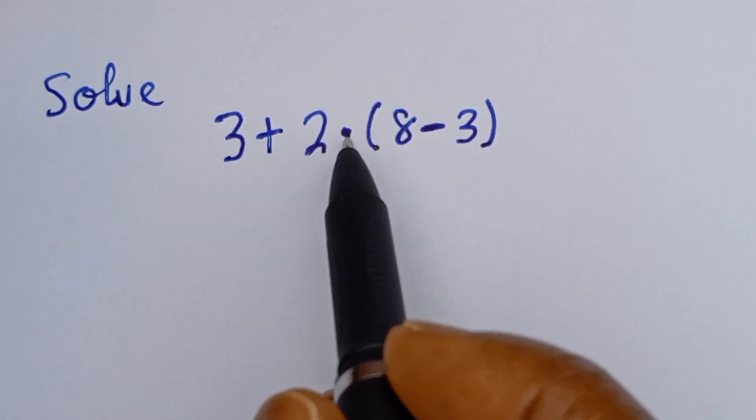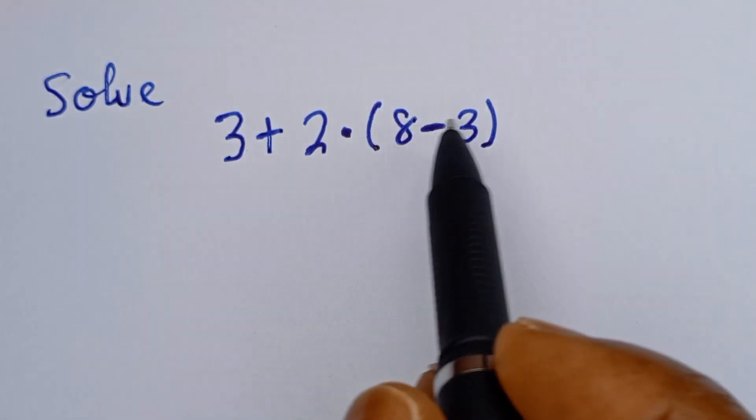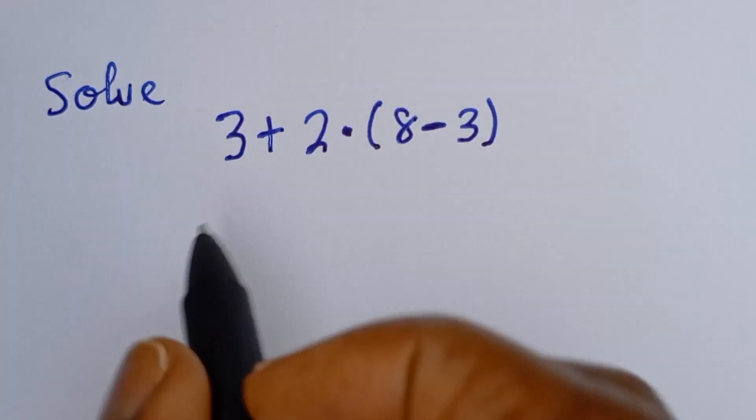So, 3 plus 2 multiplied by bracket 8 minus 3. In this case, we're going to make use of what we call BODMAS.